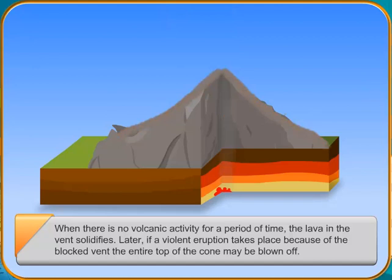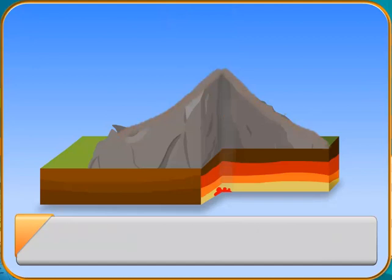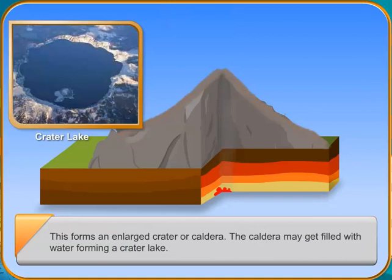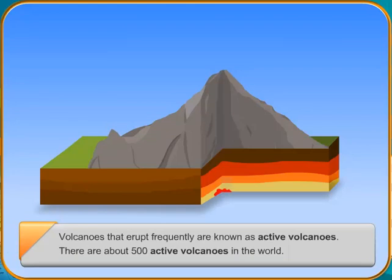Volcanoes that erupt frequently are known as active volcanoes. There are about 500 active volcanoes in the world. The active volcano in India is Barren Island.